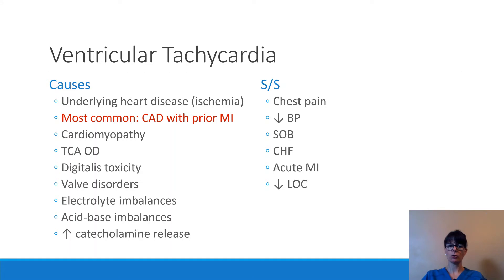The most common causes of ventricular tachycardia include coronary artery disease with a prior myocardial infarction — the heart has taken an insult and now has an abnormal electrical pathway or irritable cardiac cell causing VTAC. Other causes include underlying heart disease, anything that causes ischemia, cardiomyopathy, tricyclic antidepressant overdose, digitalis toxicity — remember digoxin has a very narrow therapeutic range and can cause all kinds of EKG rhythm problems — as well as valve disorders, electrolyte imbalances, acid-base imbalances, and anything that causes increased catecholamine release.